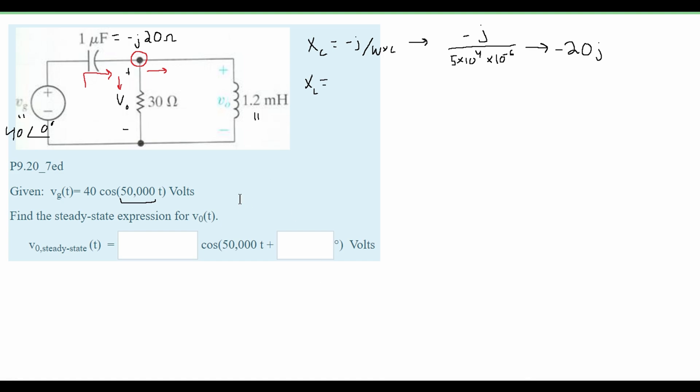Next we're going to solve for our XL and this is for our inductor. For an inductor we are going to have our j times our omega times our inductance.